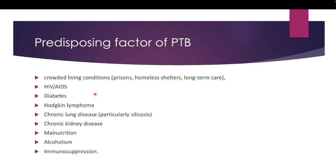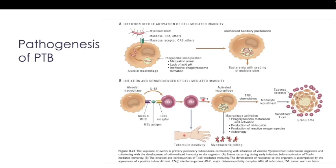Predisposing factors for pulmonary tuberculosis include crowded living conditions such as prisons, homeless shelters, and long-term care facilities; HIV/AIDS; uncontrolled diabetes — in Malaysia's clinical practice guidelines, all diabetic patients require at least yearly TB screening; Hodgkin lymphoma; chronic lung diseases particularly silicosis; chronic kidney disease; malnutrition; alcoholism; and immunosuppression.